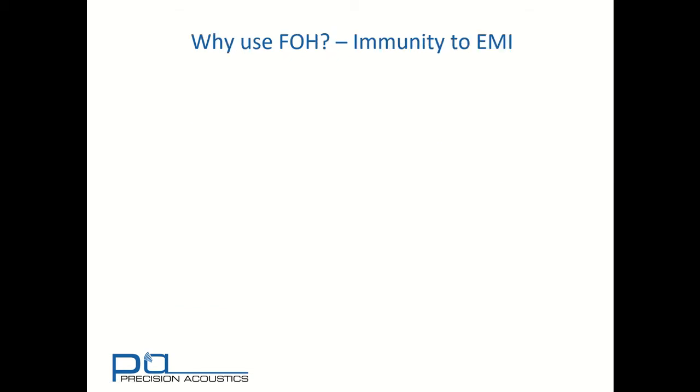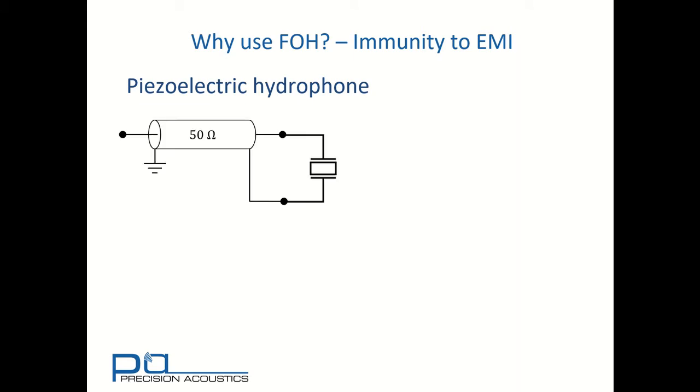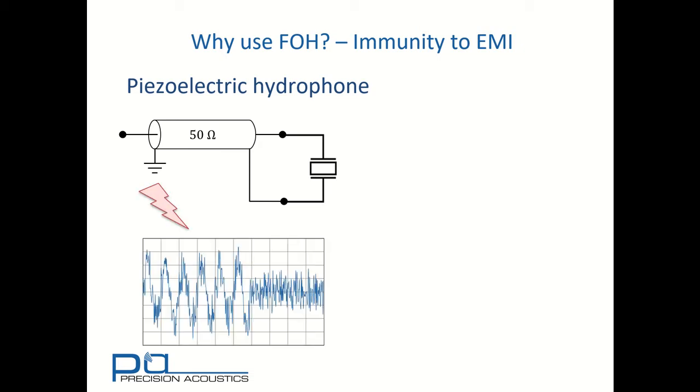Another important consideration with fiber optic hydrophones is their immunity to EMI. Consider a piezoelectric hydrophone shown here. We have a sensing element, which is connected electrically, probably via some form of transmission line, back to a sensing circuitry. In the presence of electromagnetic noise, even with very good grounding, some of the noise makes its way back to the received circuitry. In high noise amplitudes, this can lead to a very noisy signal.